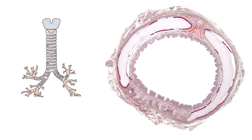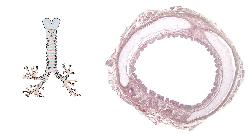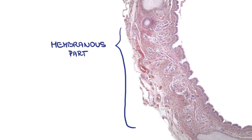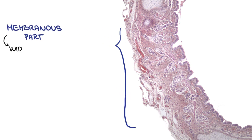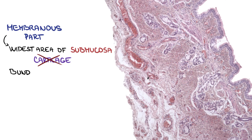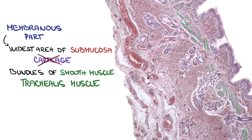The open ends of the cartilage are on the posterior surface, facing the esophagus. There is a membranous part between these open ends, and it's simply the widest area of submucosa without cartilage.